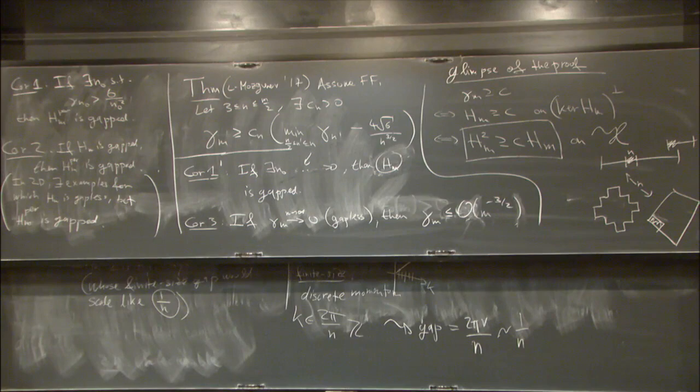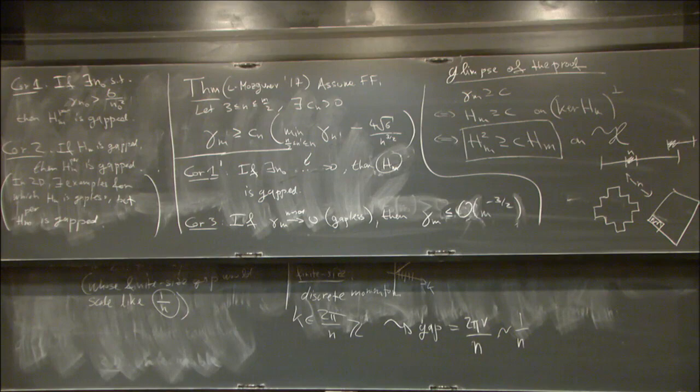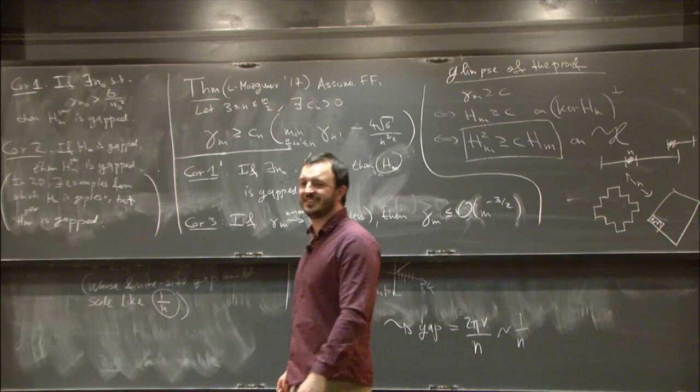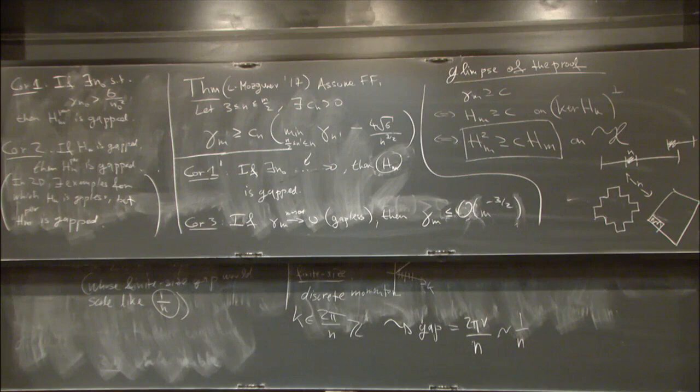Whether gamma_N is monotone decreasing in N for frustration-free systems is expected but not proved. If that were established, verification would only require checking the last (largest) N, since matrix sizes grow exponentially. Corollary 3, as stated, needs refinement: the precise version is that if the gap behaves like N^{-3/2+ε} for some ε > 0, then the system must be gapped — once you give yourself an epsilon, the minimum over nearby sizes in the bound is no longer an issue.